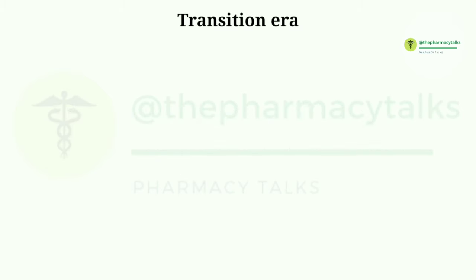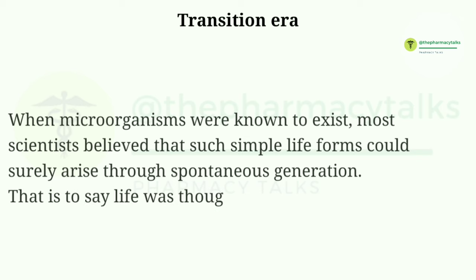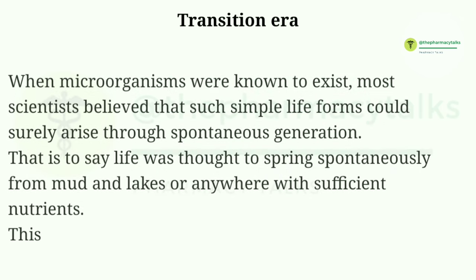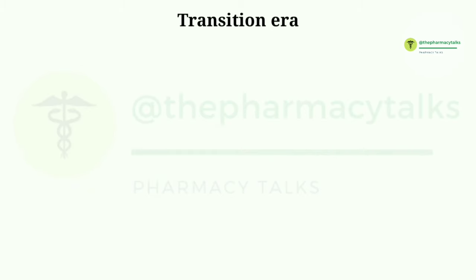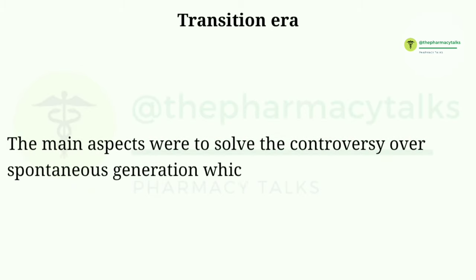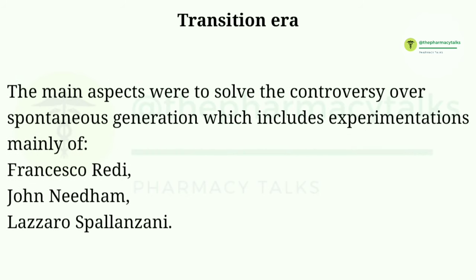Next is the Transition era. When microorganisms were known to exist, most scientists believed that such simple life forms could surely arise through spontaneous generation — that is, life was thought to spring spontaneously from mud and lakes or anywhere with sufficient nutrients. This concept persisted until late into the 19th century. The main aspects were to solve the controversy over spontaneous generation, which includes experimentations mainly of Francesco Reedy, John Needham, and Lazzaro Spallanzani.